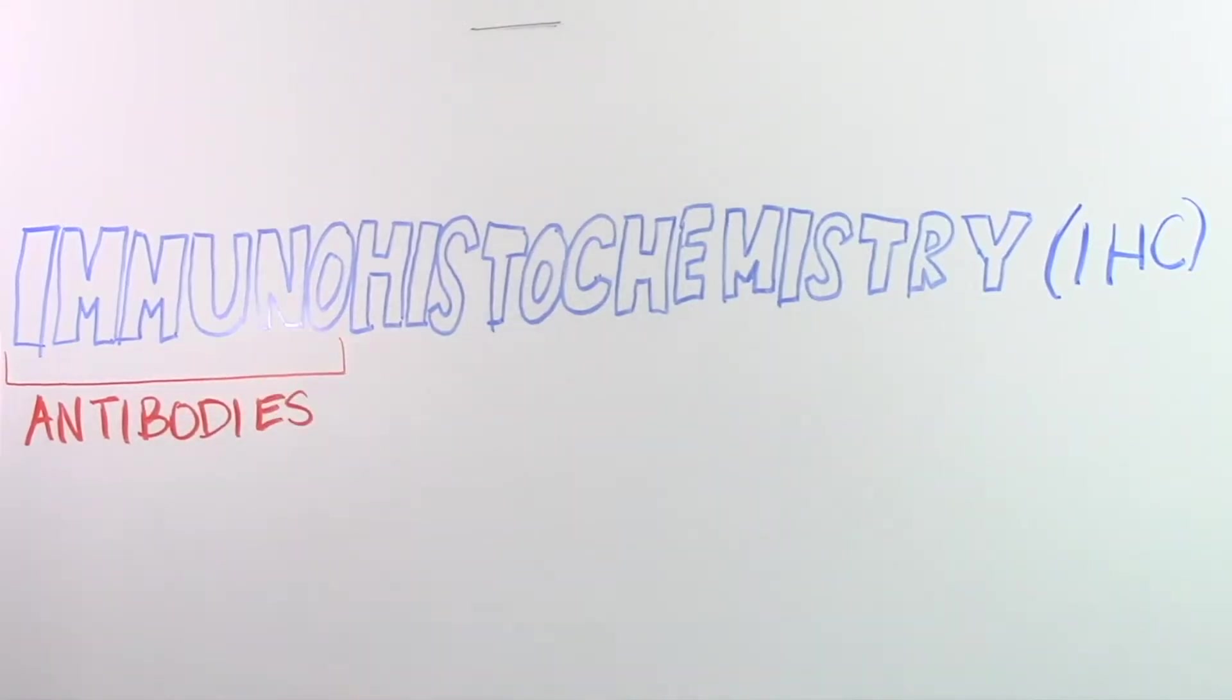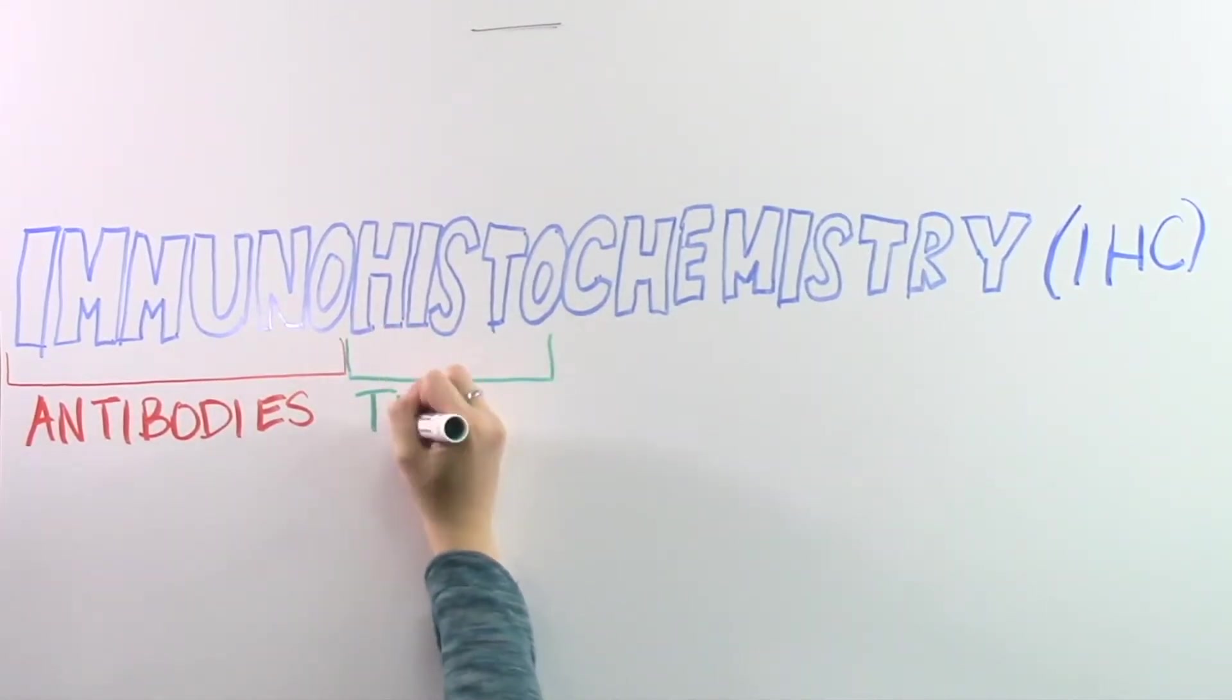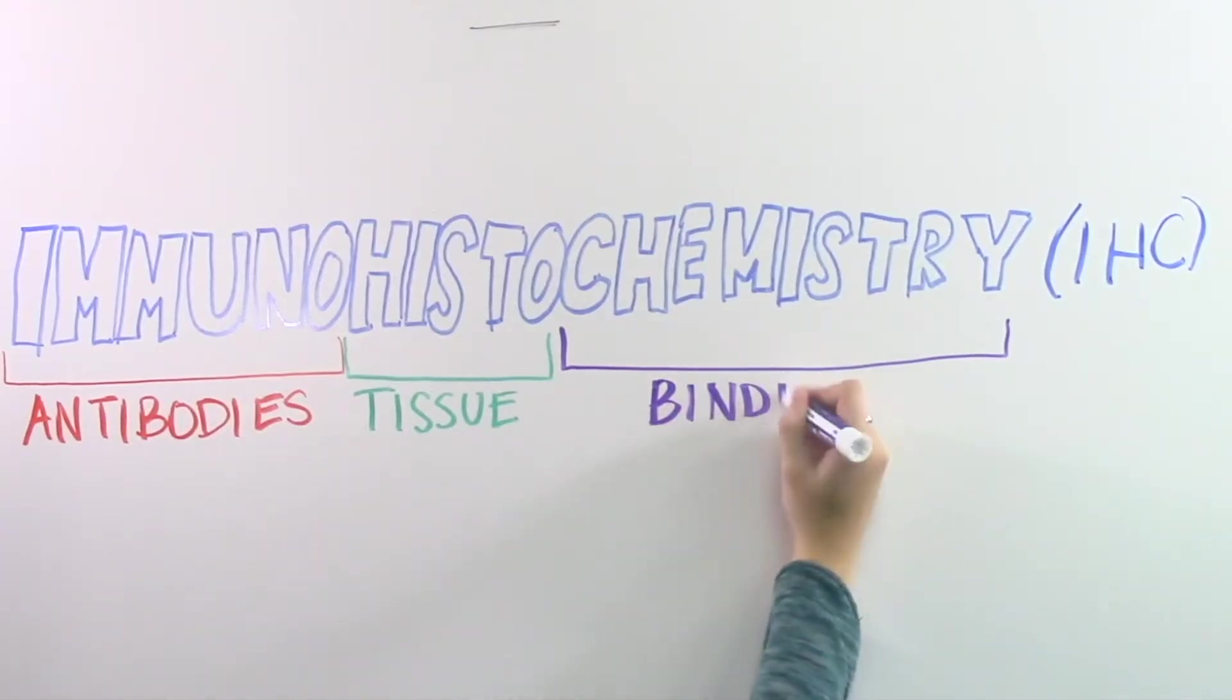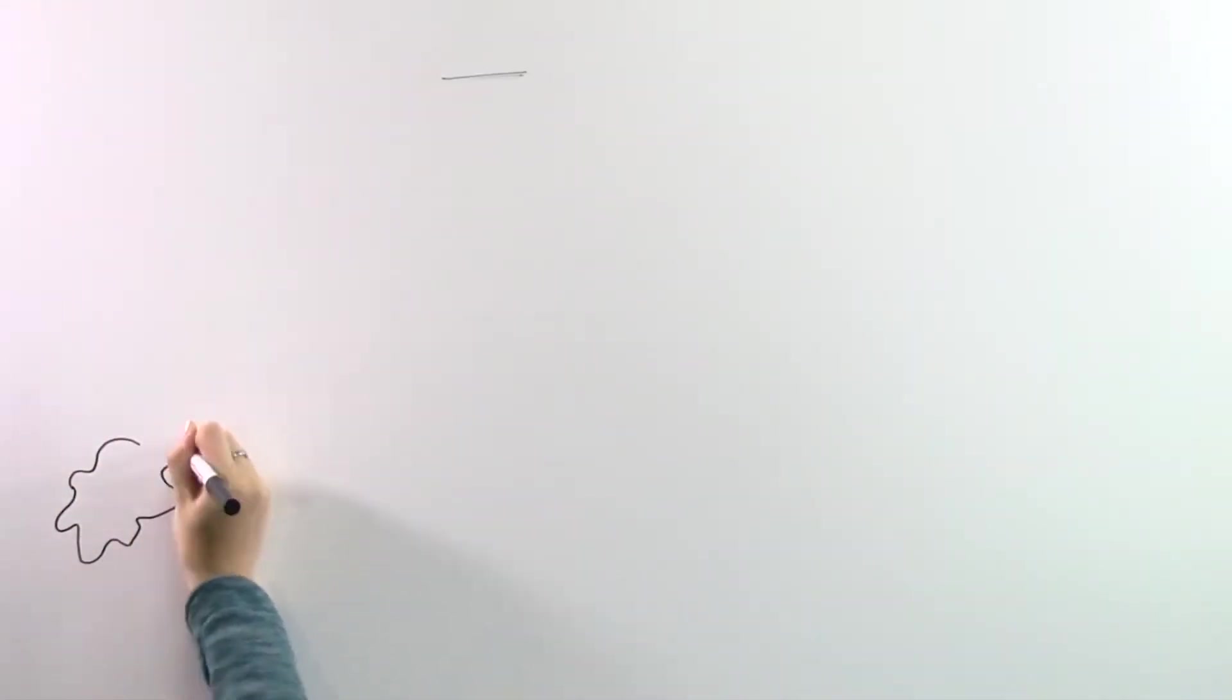Immuno stands for antibodies, which are used in this method. Histo stands for tissue, and chemistry stands for the binding that occurs between the two. Let's explore how it works.